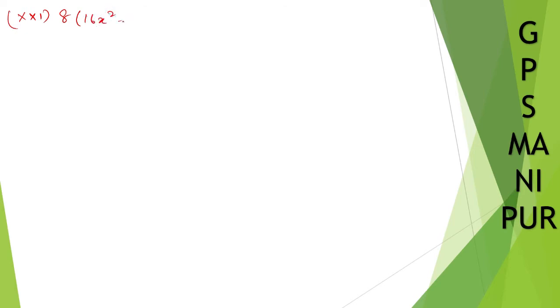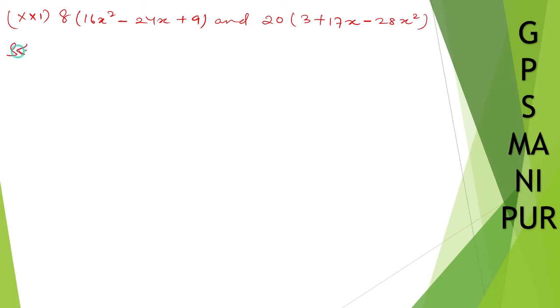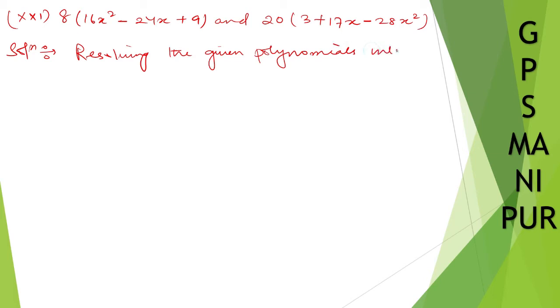Now we are doing exercise 2.4, question number 1, roman number 21. We have 8 into 16x² minus 24x plus 9, and 20 into 3 plus 17x minus 28x². Solution: resolving the given polynomials into factors.